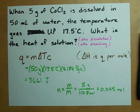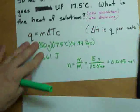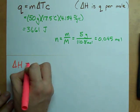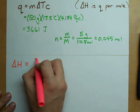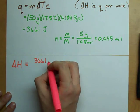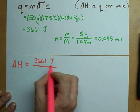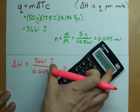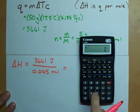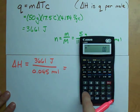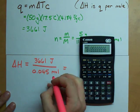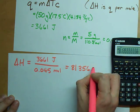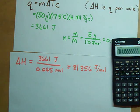Alright, this is where we enter the final stage. So let's calculate ΔH, because to calculate ΔH, all we need is the amount of heat that was released: 3,661 joules. And it only took 0.045 moles of solid to do that. So let's try 3,661 divided by 0.045. I get 81,356 joules per mole. Cool. That's how much heat was released during this process.